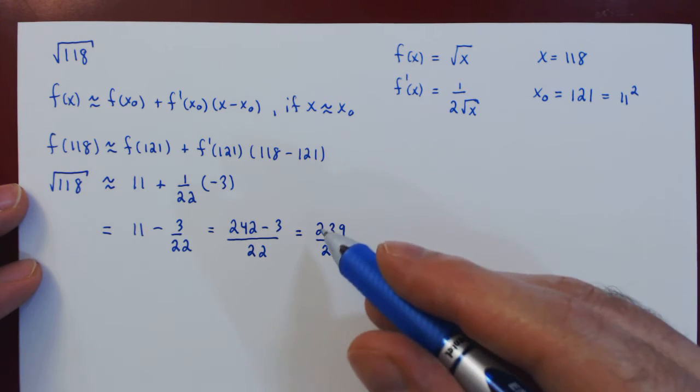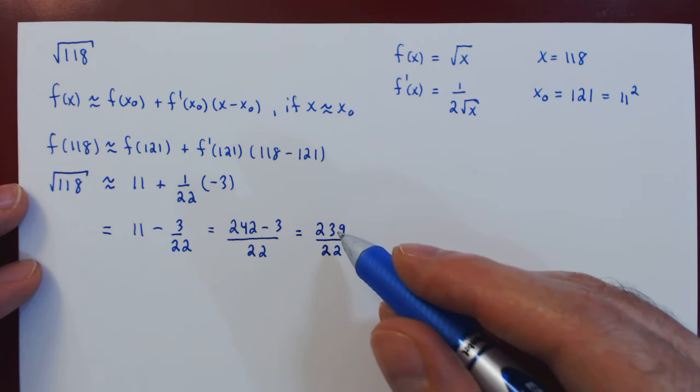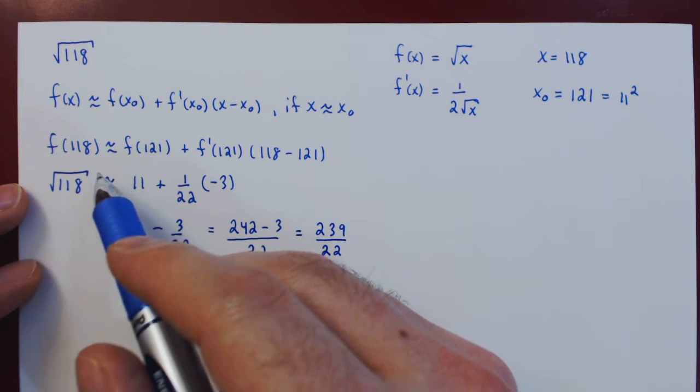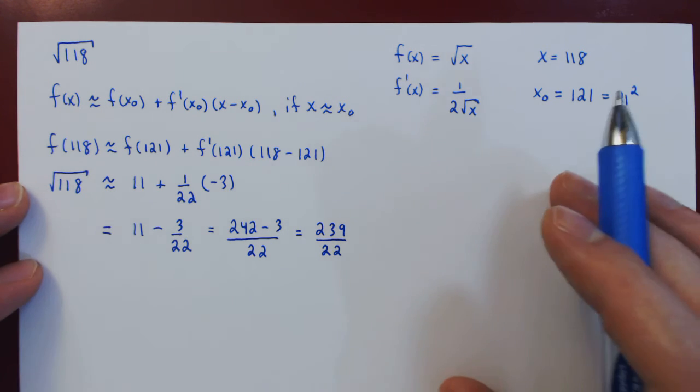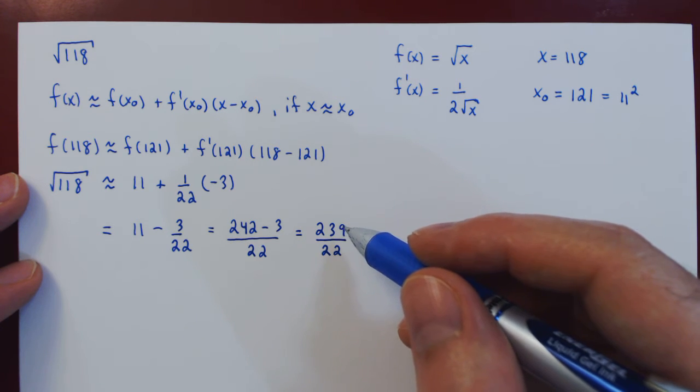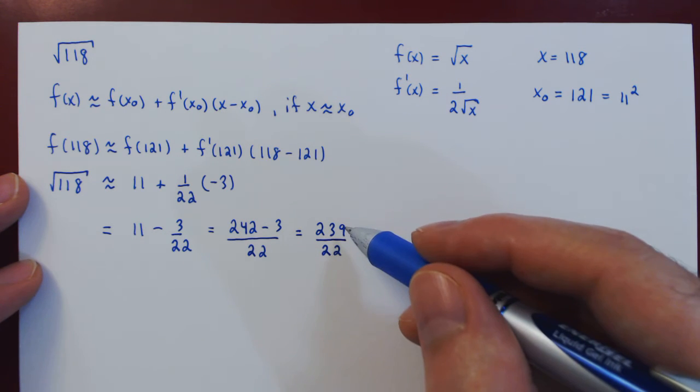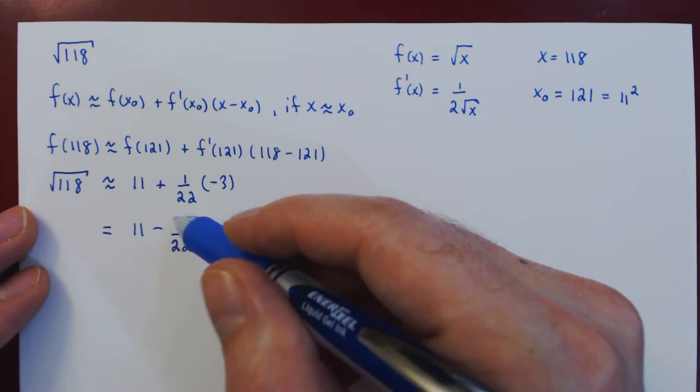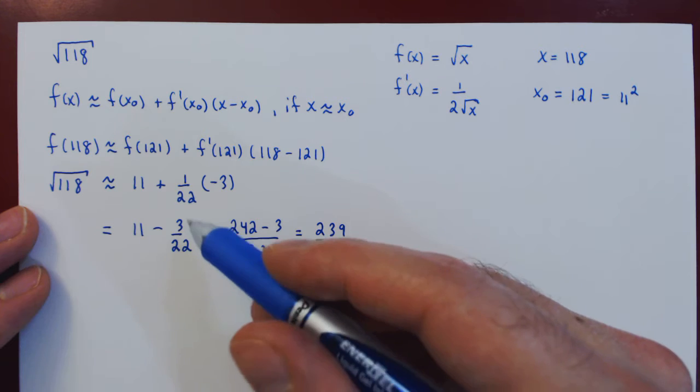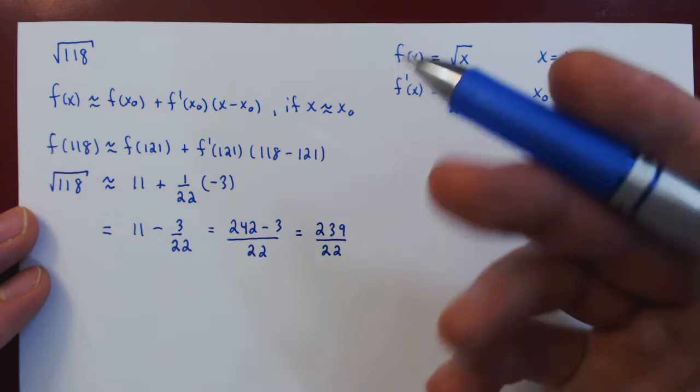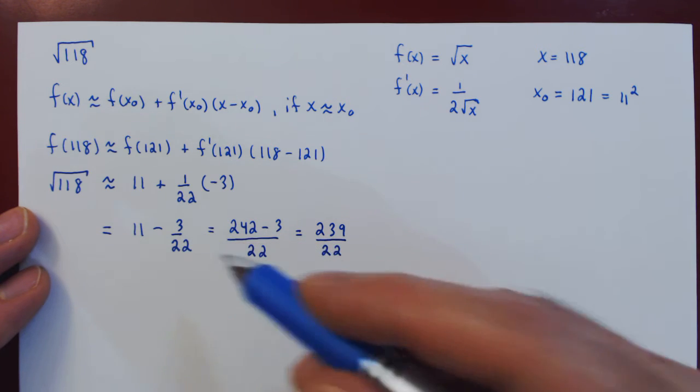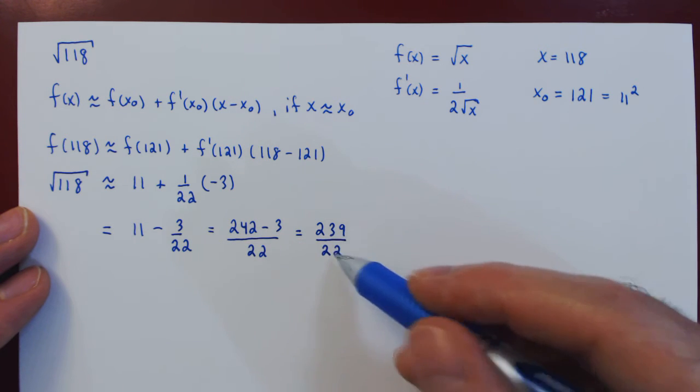But it's hard to get a feel, an intuitive feel, for a rational number. So let us also give an approximation to the root of 118 in decimal form. So the question is now, should we perform the long division on our final answer? Or perhaps go back to something a little simpler. When you divide two integers together, the smaller the integers, the easier the long division is to perform. So we're better off doing the long division on 3 over 22 than on 239 over 22.